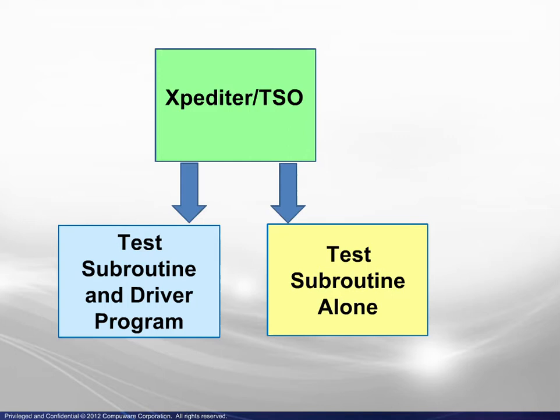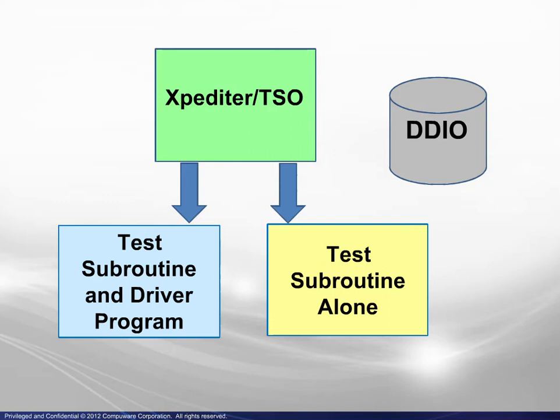All subroutine testing assumes that the source is available in a DDIO file. If not, a subroutine may still be called for its processing, but code step-through will not be available.